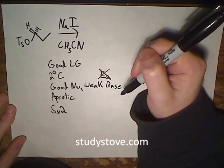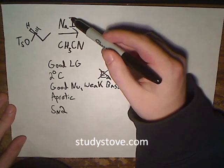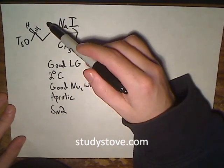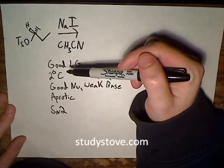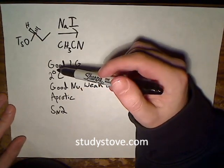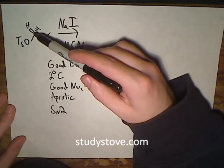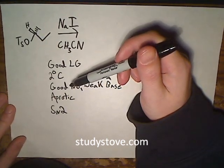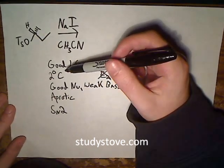The iodide ion is going to do a backside attack and kick off the tosyl group. In doing so, it's going to cause a stereochemical inversion of this stereocenter. When we draw the final product, we have to take that into account.